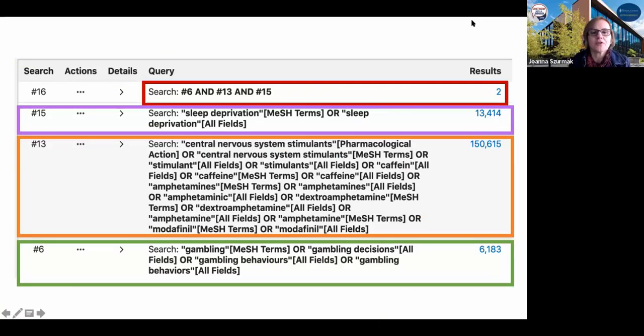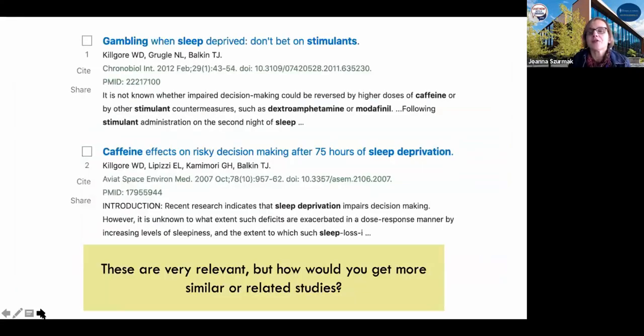We see in our search history that the way we combined our single concept queries that we used to probe all the concepts is by using the Boolean operator AND. Look how simple it is. We just use the line numbers of the searches from our search history. It's extremely modular. It's a little bit like computer programming. So it is a kind of coding, but we only have two results. This is brutal. It just shows us that most likely our gambling is very much a bottleneck. Bottlenecks are common, and there are strategies for dealing with bottlenecks.